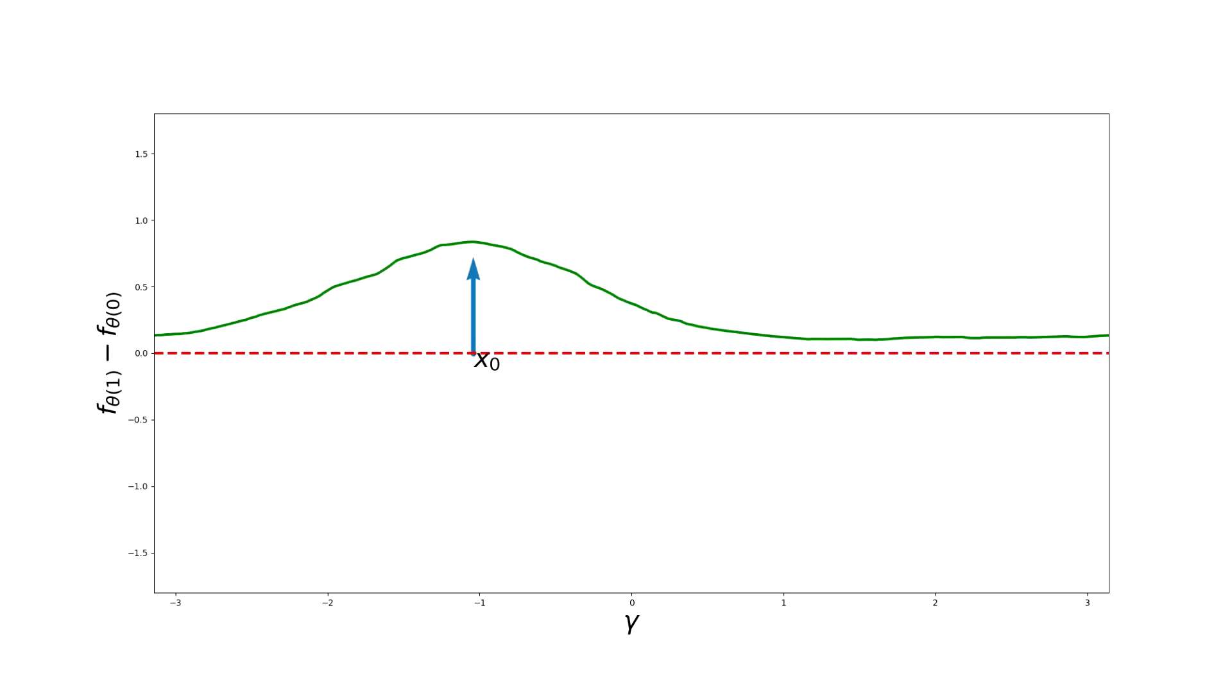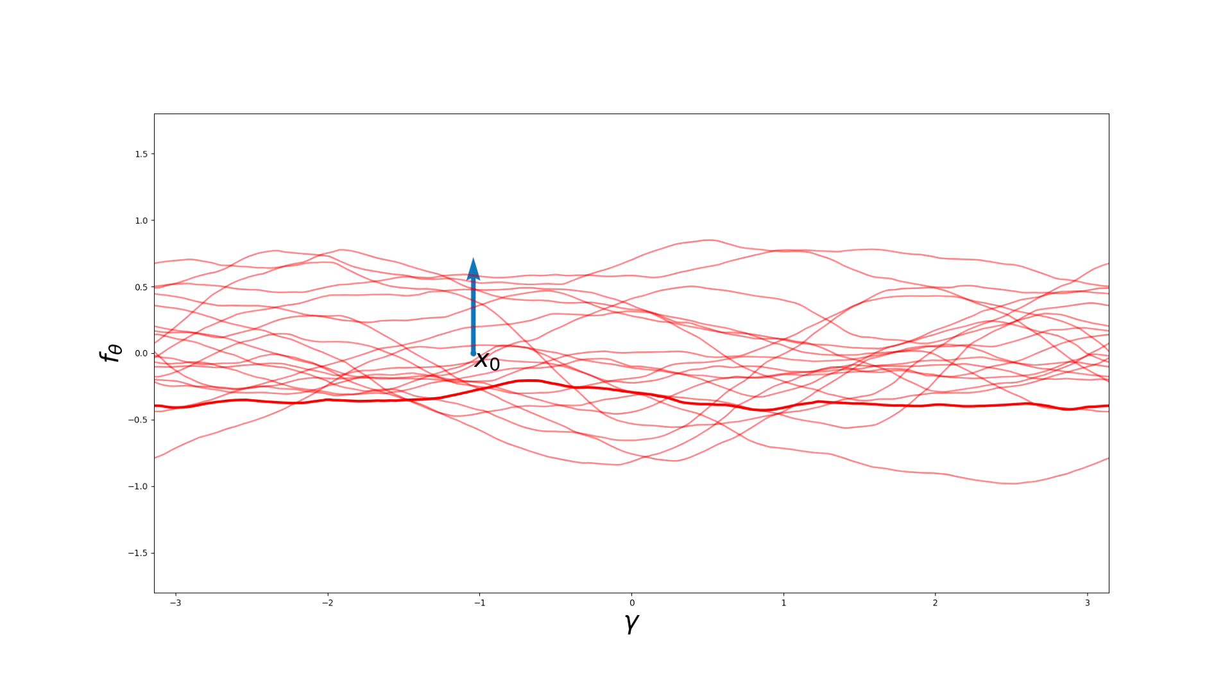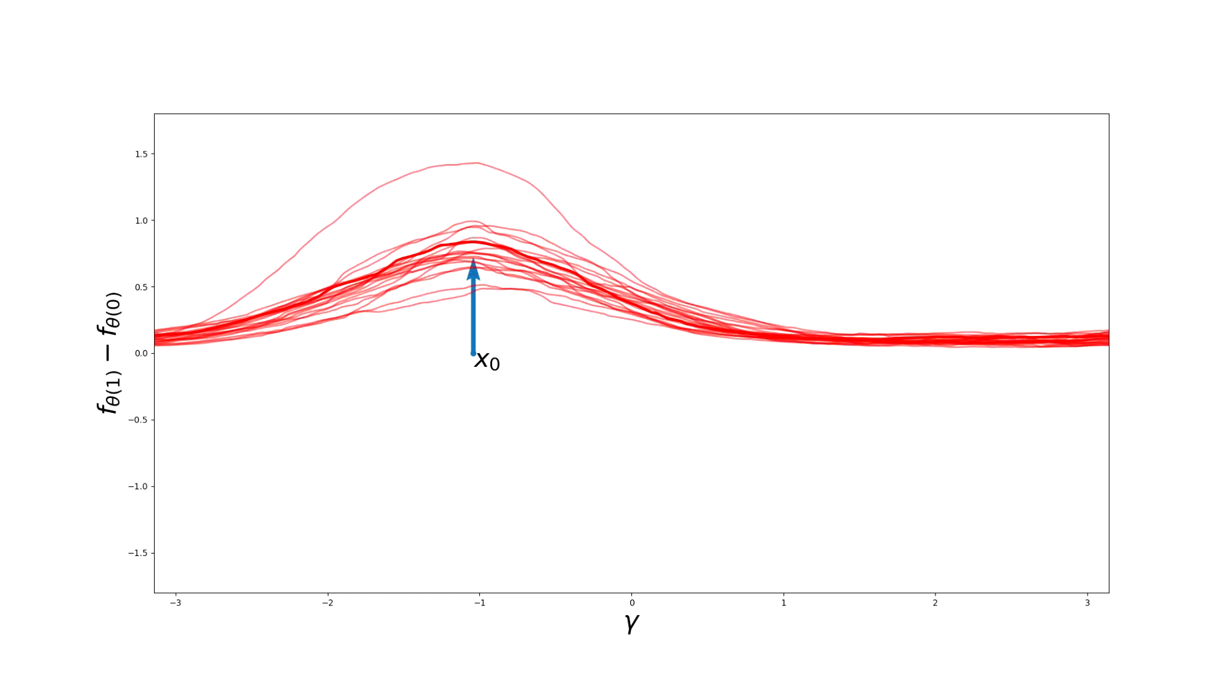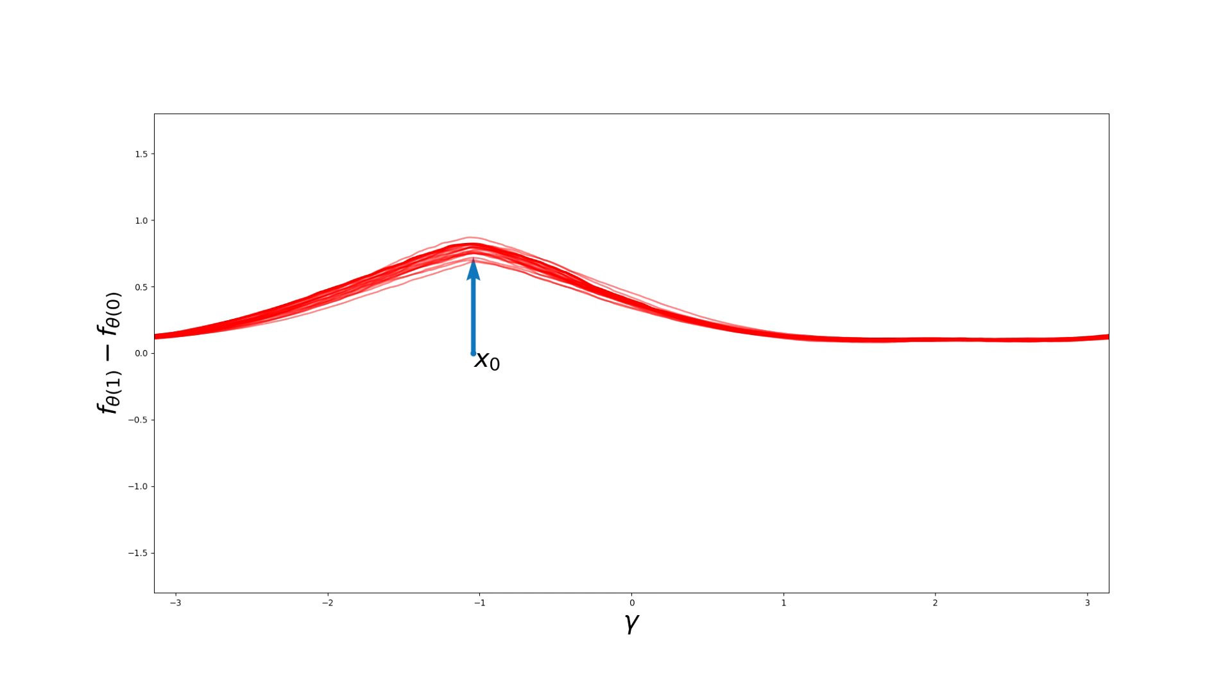If we now plot the difference between the two time steps, we see a smooth spike centered in x0. What is even nicer is that this difference is almost the same for different initializations. And as we increase the width of the network, they become even more similar.